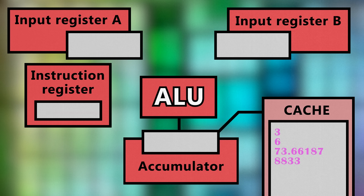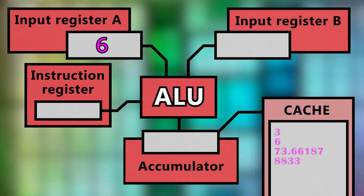But how do the ALU and the FPU know what to work on? Data is fed to these units by registers — temporary holding places for whatever the CPU core has to process next. One type of register, called an input register, holds the data that the CPU needs to process, while another type, called an instruction register, tells the CPU what to do with that data. So if the system needs to multiply six and three, it will place six and three into the input registers and a multiply instruction into the instruction register.